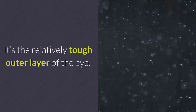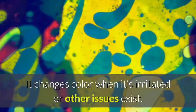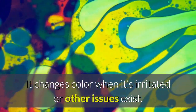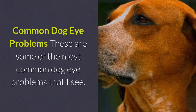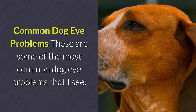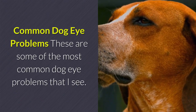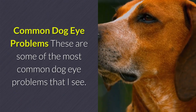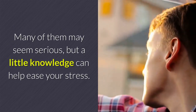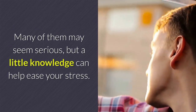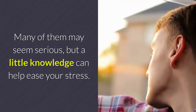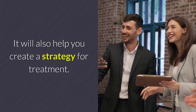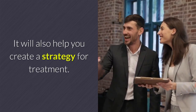The sclera is the white of the eye — it's the relatively tough outer layer and it changes color when irritated or other issues exist. These are some of the most common dog eye problems. Many of them may seem serious, but a little knowledge can help ease your stress and help you create a strategy for treatment.